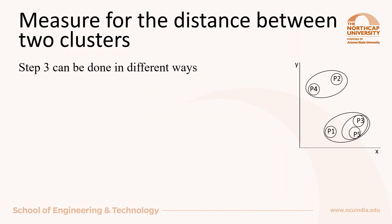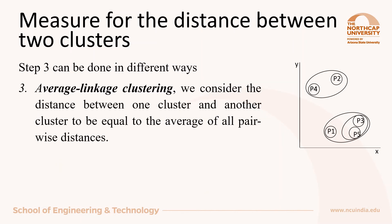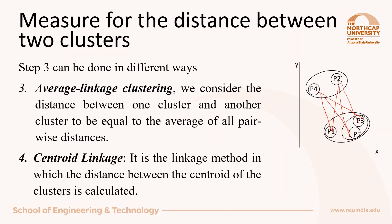The next way to calculate the distance between two clusters is average linkage clustering. Here we consider the distance to be equal to the average of all pairwise distances. You find the distance between each and every point of the two clusters and then take the average — this gives you average linkage clustering. Next, in centroid linkage, you find out the centroid of the first cluster and the centroid of the second cluster, and the distance between the centroids gives you the distance between the two clusters.